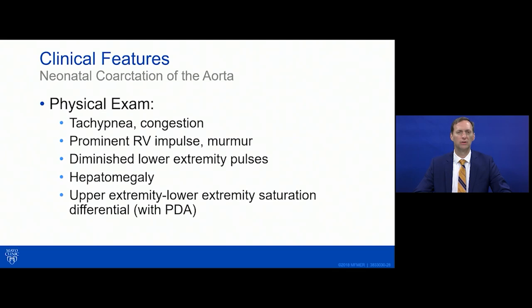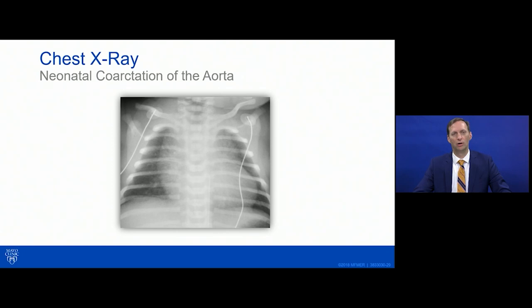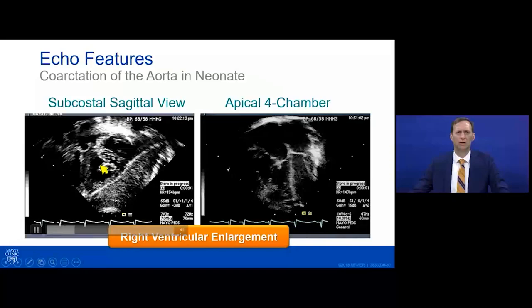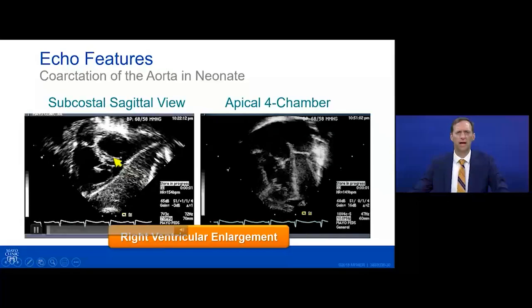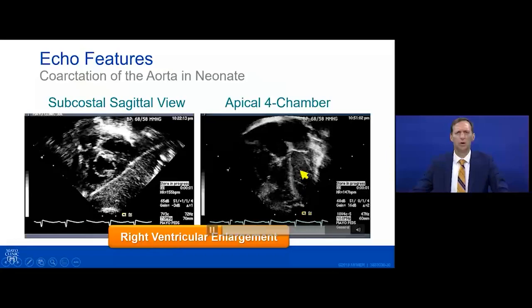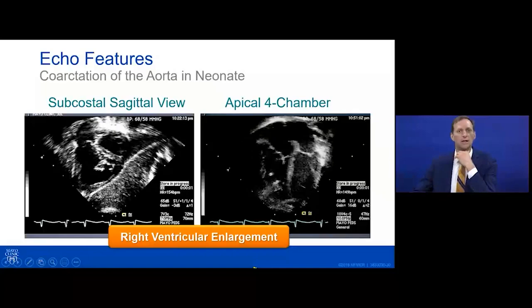The chest x-ray in a neonate with coarctation is not very helpful — a large thymus obscures the mediastinal shadow, and there may be some lung field congestion or right atrial prominence suggesting right heart enlargement. On echo, from the subcostal sagittal view, you see a large right ventricle, flattening of the ventricular septum, and potentially poor LV squeezing. The four-chamber view shows a thick dilated right ventricle with a smaller LV — right ventricular enlargement and hypertrophy are the hallmark findings.